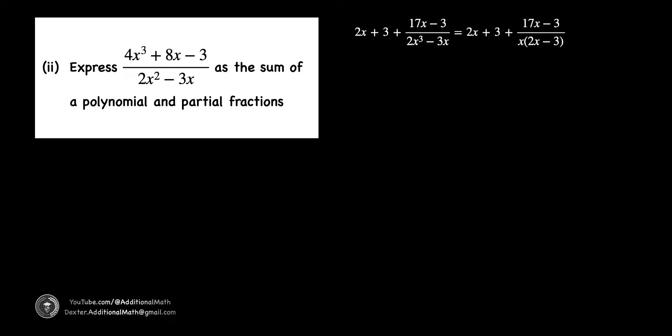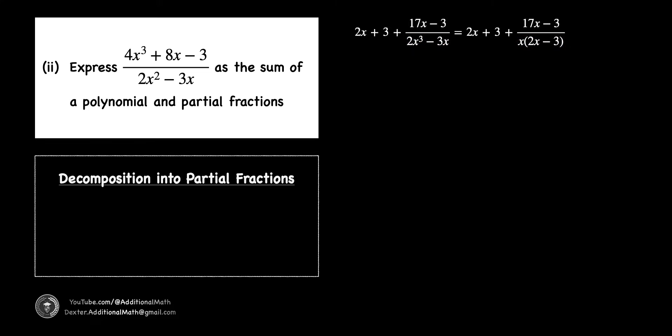We will begin part 2 by factorizing the denominator of 2x squared minus away 3x into the product of x and 2x minus 3. For the decomposition into partial fractions, if the denominator contains distinct linear factors, such as the product of Ax plus B and Cx plus D, we can express the partial fractions as A divided by the first linear factor plus B divided by the second linear factor.